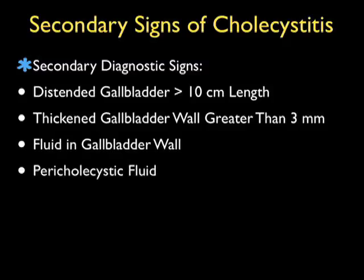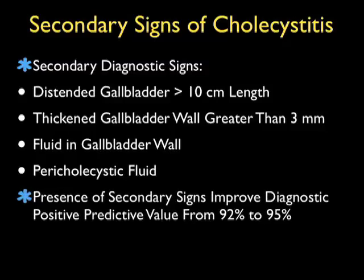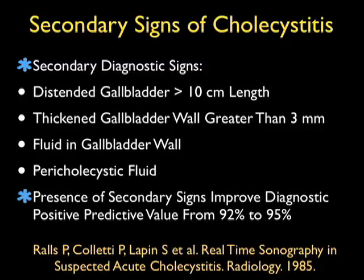Also, we can have pericholecystic fluid — a line of fluid outside the gallbladder wall — as a result of inflammation or early perforation. The presence of these secondary signs of acute cholecystitis does improve our diagnostic positive predictive value, but only increases the yield from 92% to 95%. So it's most important to look for the primary diagnostic signs of acute cholecystitis.